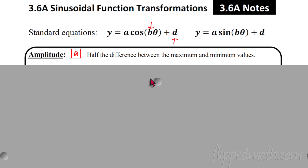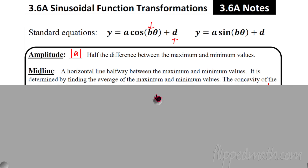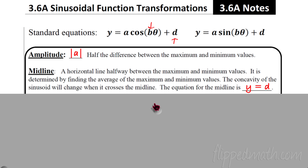But we're going to review some of the things we learned last time, like the amplitude. That doesn't change. It's half the difference between the maximum and the minimum values. If you take the middle of the graph and you see how tall the graph is, you've got to go from the middle — that's the amplitude. The midline is a little different today. Last time we said the midline is always y equals zero because all of our graphs were centered on the x-axis. But today we're going to slide them up and slide them down, and so that changes the horizontal line. It's halfway between the max and min, and it's determined by finding the average of the max and min.